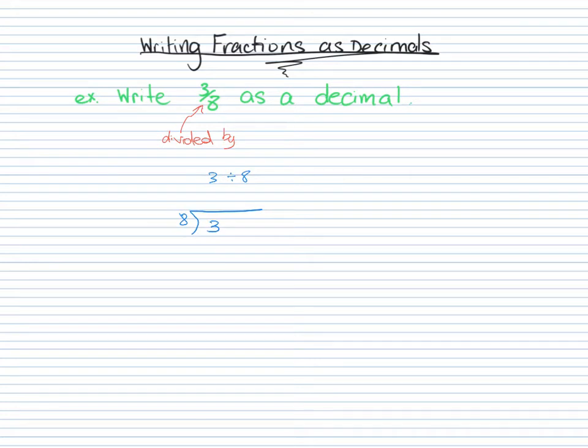All right, so now the first thing that we have to ask ourselves, how many times does 8 go into 3? Well, 8 is a bigger number than 3. It does not go into 3. So we put 0 here. All right, in order to give ourselves a chance to succeed, we need more digits, and we have to add more digits to that 3.